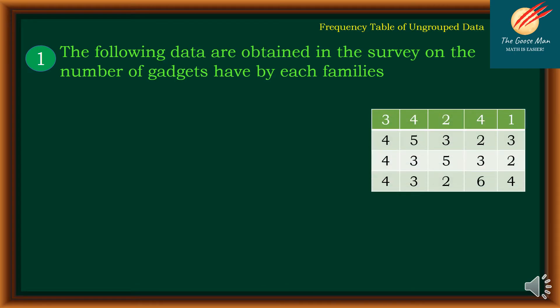The following data are obtained in a survey on the number of gadgets owned by each family. The numbers are: 3, 4, 4, 4, 4, 5, 3, 3, 2, 3, 2, 3, 5, 2, 4, 2, 3, 6, 1, 3, 2, 4. This is your ungrouped data.